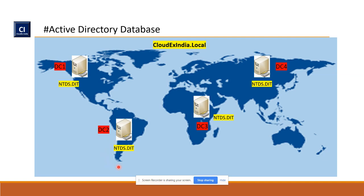This is very interesting — the ntds.dit on DC2, DC3, or DC4 is a replica of DC1. During the creation, if these domain controllers are in the same domain, the whole information — all objects stored on DC1 — is replicated and synchronized to DC2, DC3, and DC4. So ntds.dit in the same domain is a kind of replica of every other domain controller.